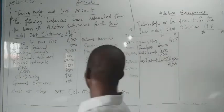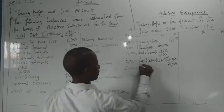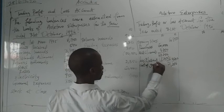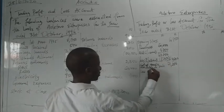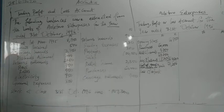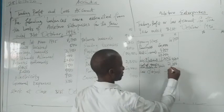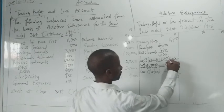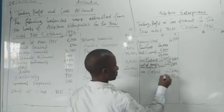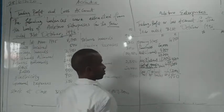There are no wages in this example, so we skip that. The goods available for sale total is 71,250. We now subtract the closing stock of 9,300, which gives us a cost of goods sold of 61,000. This is sometimes called cost of sales — cost of goods sold is the same thing.